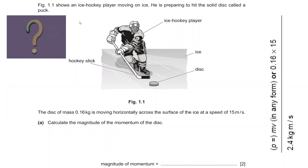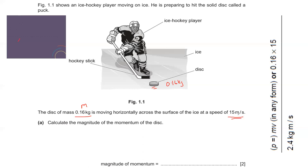Today we'll do questions related to the topic of momentum and impulse. In this question, figure 1.1 shows an ice hockey player. The mass of the disc is 0.16 kg and it is moving horizontally across the surface of the ice with a speed of 15 meters per second. Because it is moving in a straight line, the speed and velocity have the same values. We need to calculate the magnitude of the momentum.